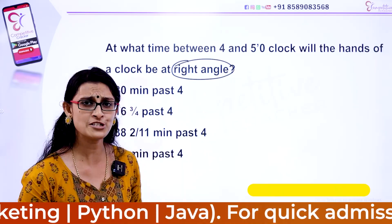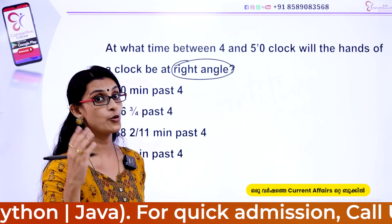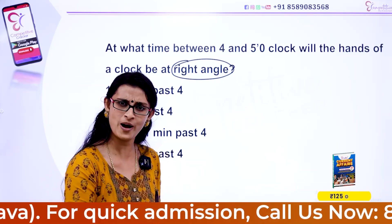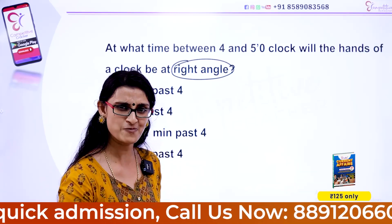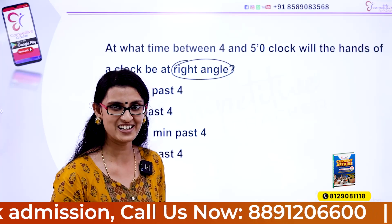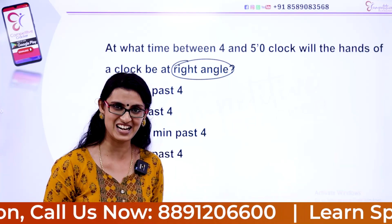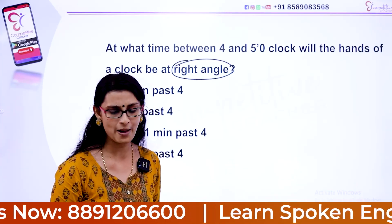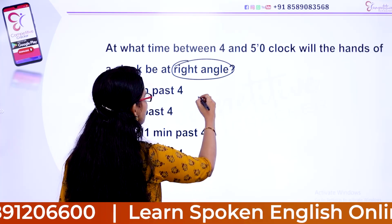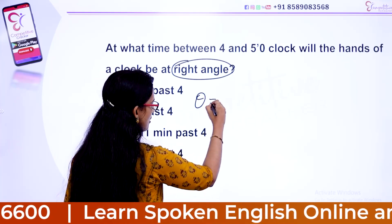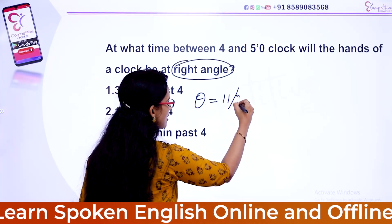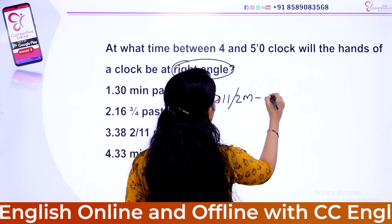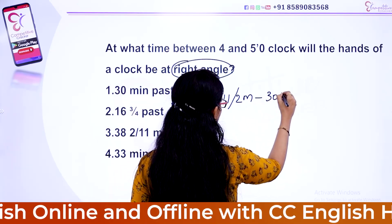There are a lot of theoretical formulas. Let's take a look at the formula. Theta is equal to 11 divided by 2 times m, minus 30h.